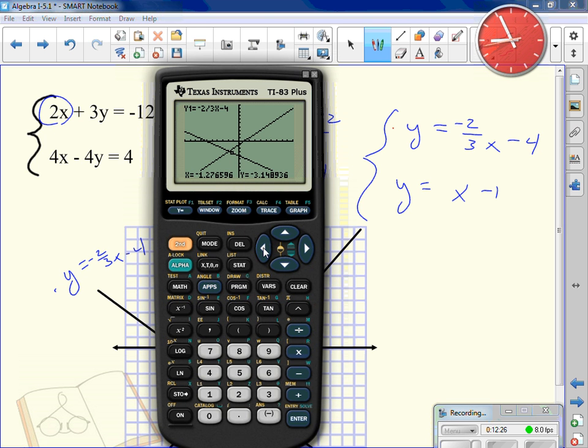Now a lot of people will go automatically and hit the trace button and try to figure out where they intersect. The trace button, it gives you an idea but it doesn't give you the correct answer. Because if you're zoomed way out, your trace is going to jump in big increments. I want to know the exact spot where they intersect. The calculator will tell me this. I hit second, that's the yellow button. Then I hit trace. Second trace brings up the calculate menu. What am I looking for here? I'm looking for the intersection. So I press 5 or go down to 5.